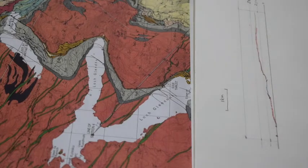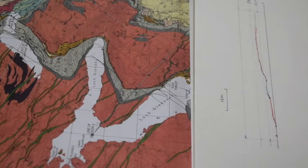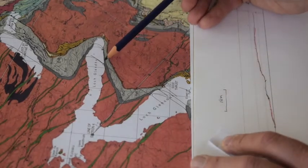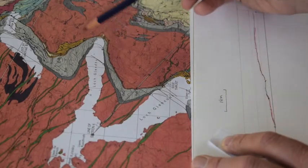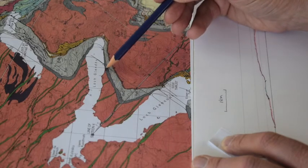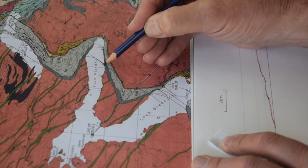So that's the surface geology. What happens below ground, which is the point of this exercise? So on the map, I've already sketched out some structure contours. Let's look at this one here.